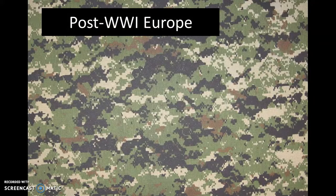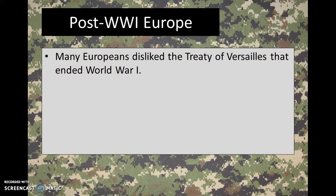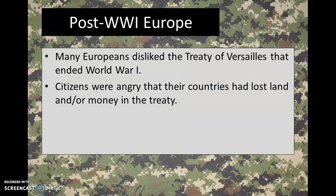In order to understand exactly why World War II occurred, we have to go all the way back to the end of World War I and the condition that Europe was left in at the end of that war. There were a lot of Europeans who did not like the Treaty of Versailles that ended World War I — it was a pretty widespread dislike for that treaty. People were angry that their countries had lost either land or money or both, because the Treaty of Versailles required that the countries that lost World War I had to forfeit land and give up money to help pay for it.